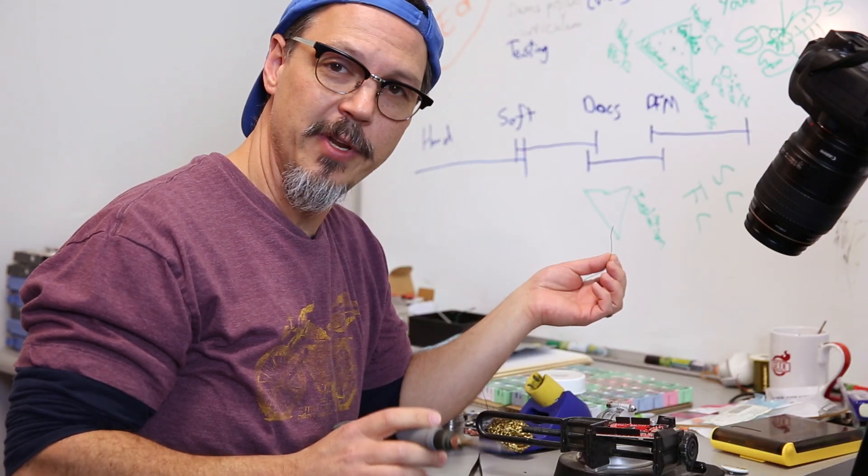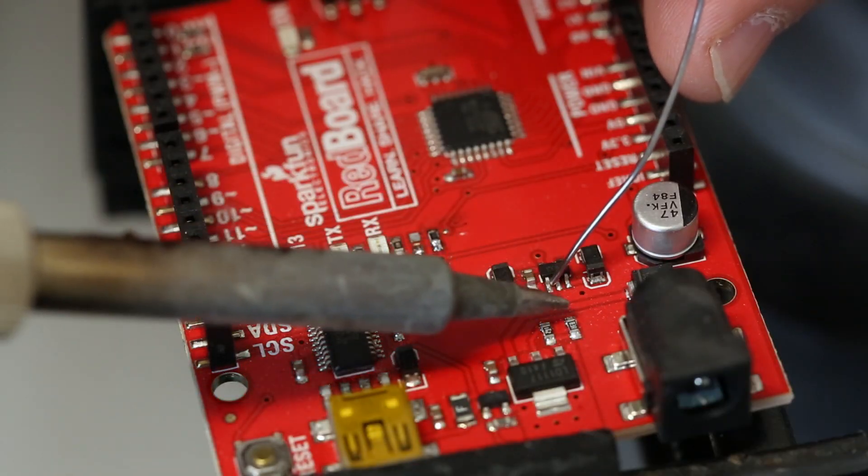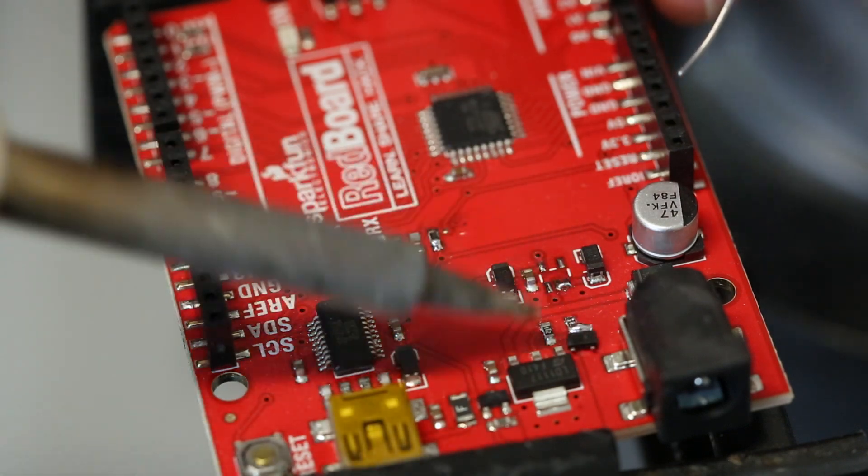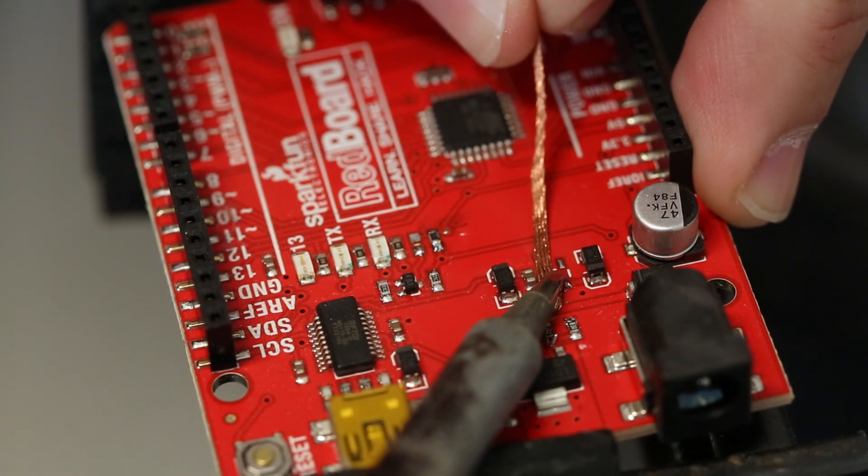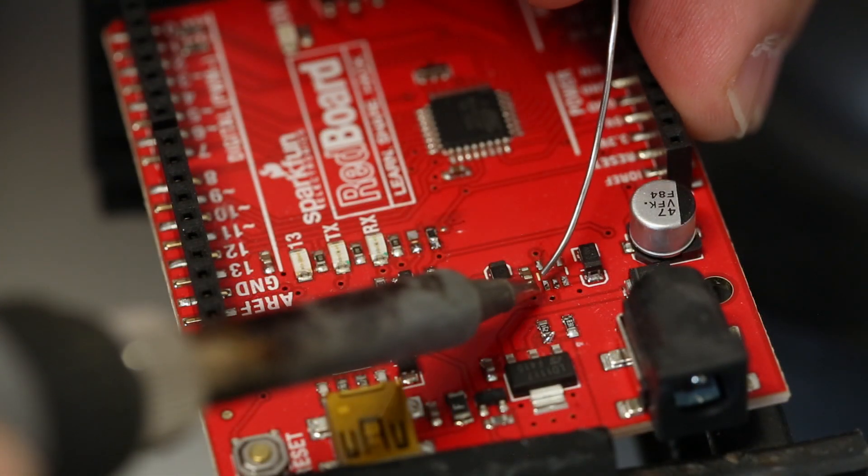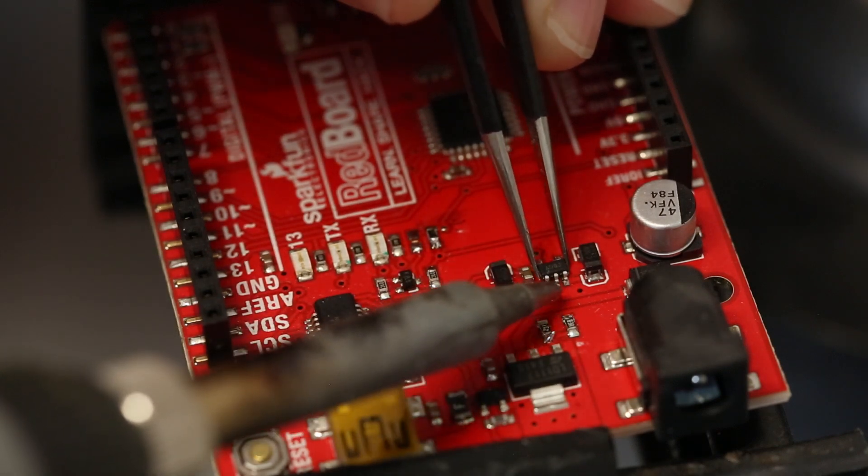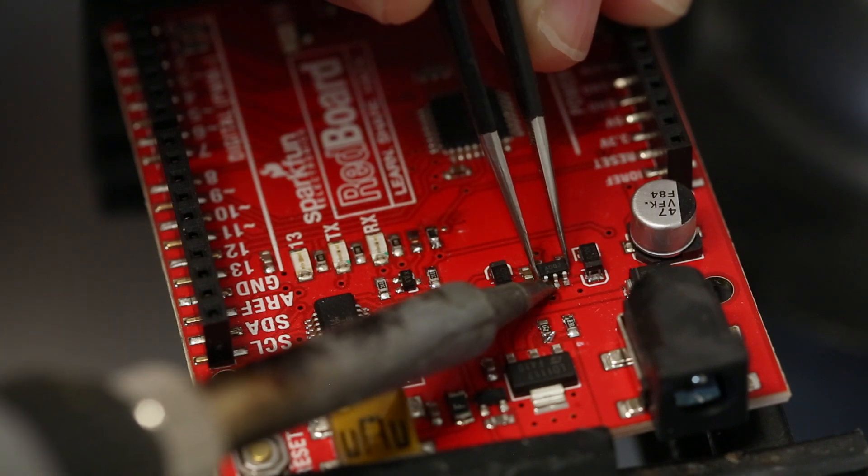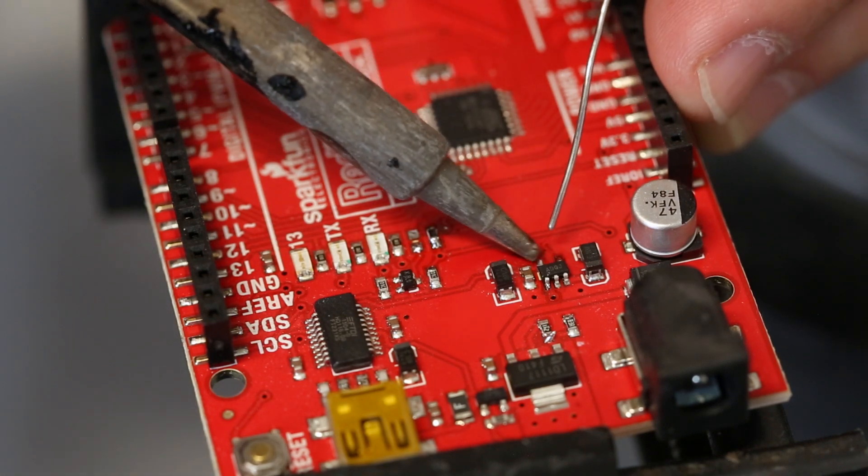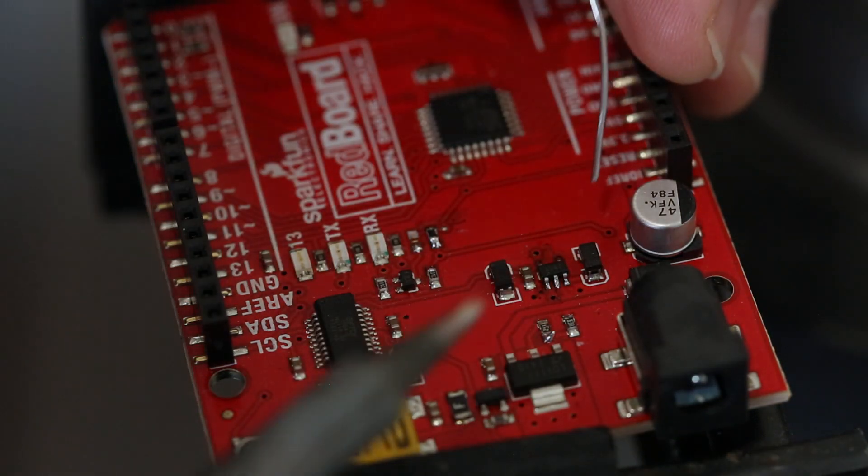Next up is a SOT 23-5 package, which is very typical for like small LDOs, voltage regulators. Same kind of thing as I did before. Apply a bunch of heat. And off it goes. And then grab your solder wick, give your tip a little clean, and there you go. Nice clean footprints ready to go. To replace it with some arbitrary SOT 23-5 package, you pick the pin that's closest to you, give it a little extra solder on it because that's going to be your anchor pin. And then I will immediately go to the opposite side and get those guys. And that's how you replace a SOT 23-5.